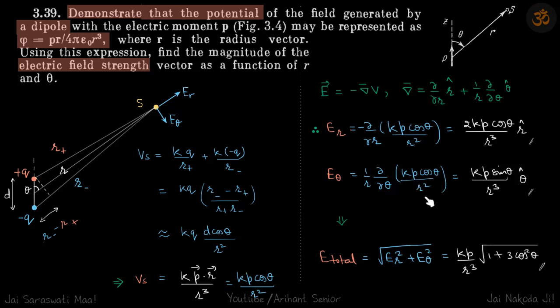If you differentiate this, kp cos θ is constant with respect to r, so this will become 1/r³. The minus will get cancelled giving (2kp cos θ)/r³ r̂. For θ, kp/r² is constant so we'll take that out. ∂/∂θ of cos θ is -sin θ, so minus minus will get cancelled and we'll get (kp sin θ)/r³ θ̂. So we have the field now in terms of r and θ.